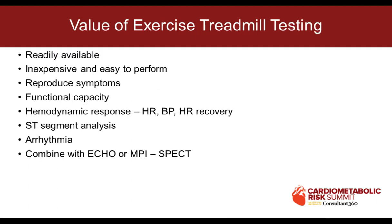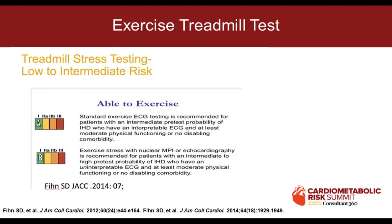Starting with exercise treadmill tests: when you want to assess somebody for coronary artery disease, you should always try to exercise them because there's a tremendous amount of information that can be gained — readily available, inexpensive, easy to do. You can reproduce their symptoms, assess functional capacity, look at heart rate, blood pressure response, and heart rate recovery. You can look at ST segment changes, arrhythmias, and combine this with imaging such as echo, SPECT, or PET.